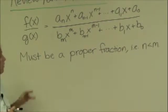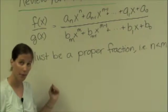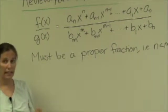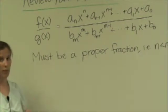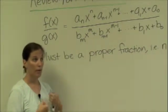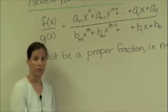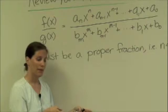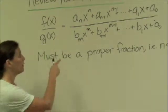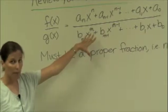If the degree of g is less than or equal to the degree of f, what we have to begin by doing, before we can apply the method of partial fractions, is long division or some other method to reduce our fraction to some whole numbers, possibly some x's plus a proper remainder.